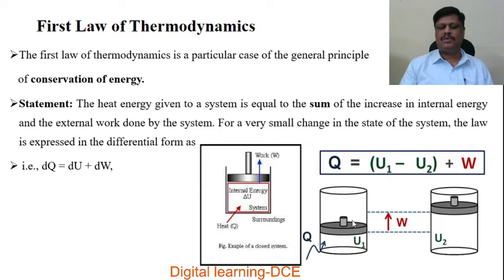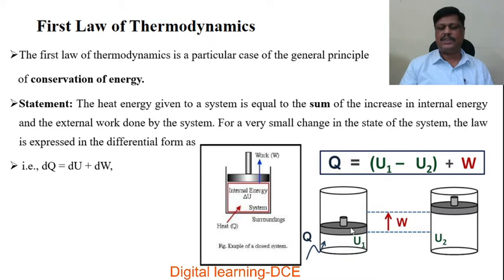The piston moves through a certain distance. This is the initial position of the piston and this is the final position of the piston. There is a movement of the piston due to expansion of the gas caused by the supply of heat, hence there is work done represented by W. The amount of heat supplied equals the change in internal energy plus work done W.